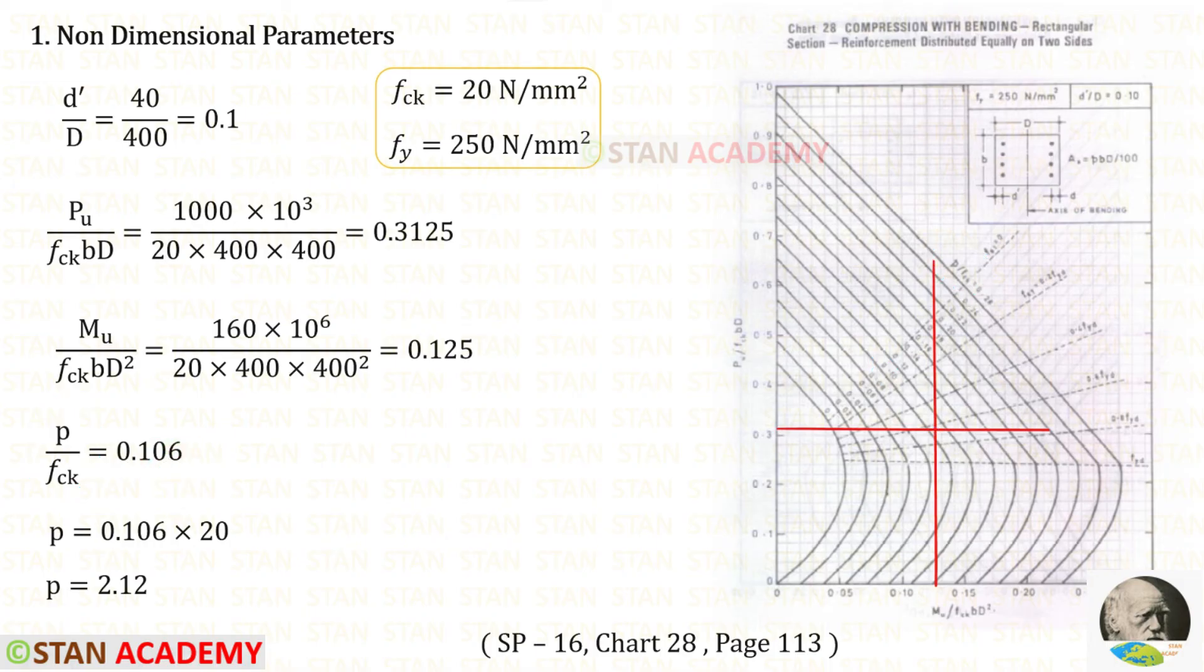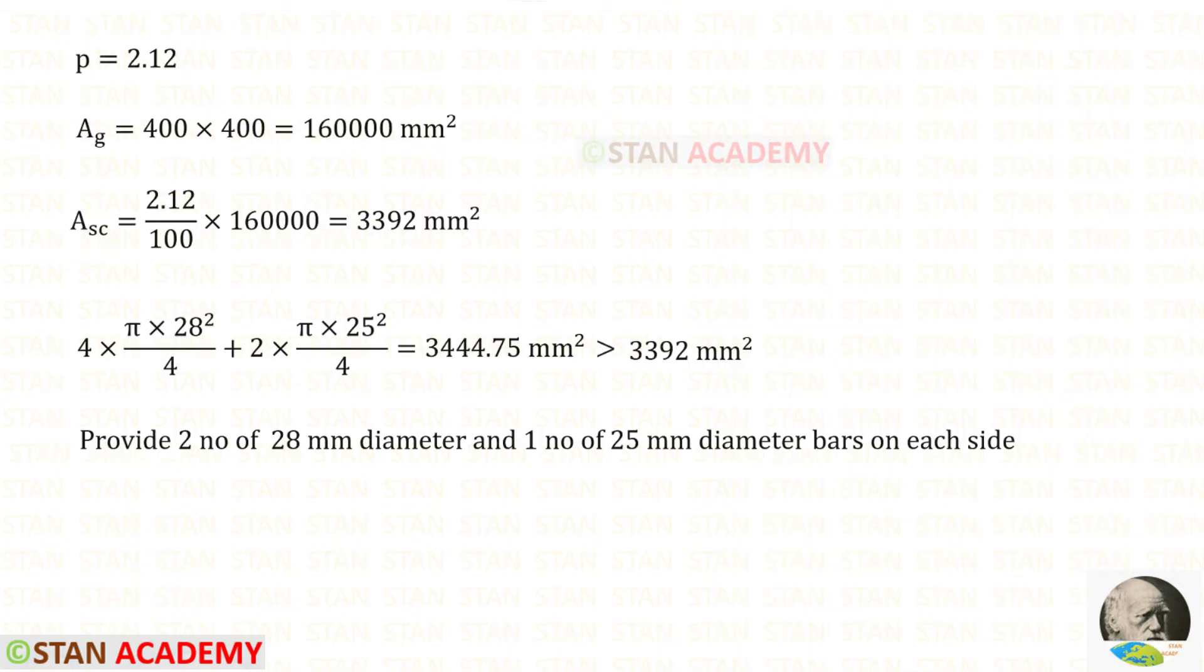Our fck is 20. So for p we will get 2.12. Now let us find the gross area. For that we have to multiply the side with the side so that we will get this.